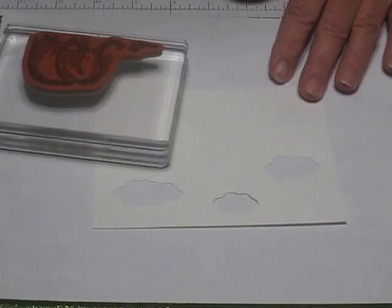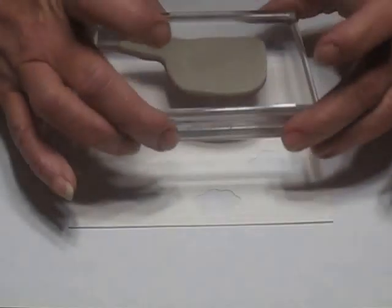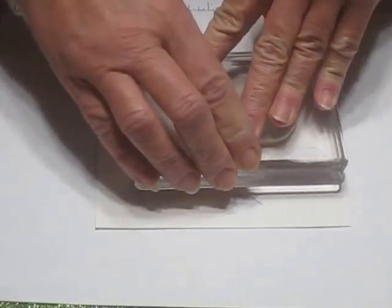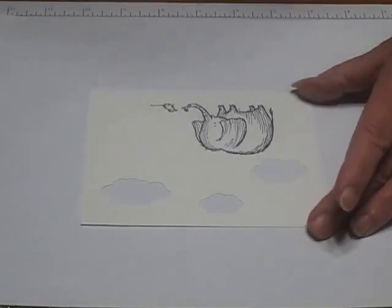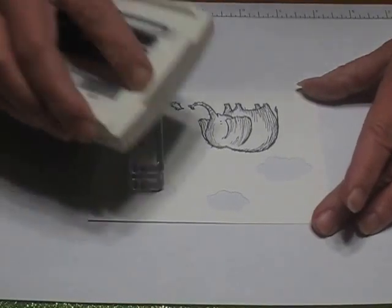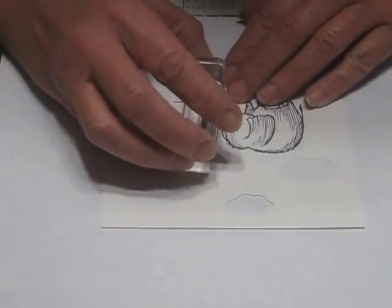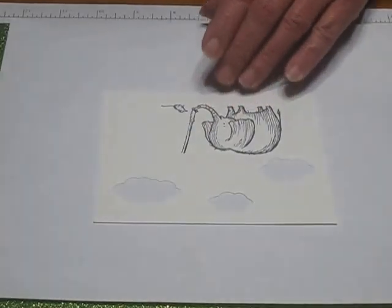We're going to start by inking up the elephant and the mouse in Archival Black. I'm using that because I'm going to watercolor on this. Then the umbrella handle, ink that also in Archival Black, and I'm going to line up the bottom of that handle so it sits right in that trunk. Like so.